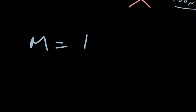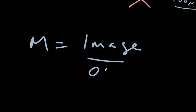Just to recap: magnification equals size of the image divided by the size of the object. The size of the object is the actual real-world size of the thing, the size of the image is the size of the picture of the thing, and the magnification is the number of times bigger the image is than the object. I hope that makes sense.